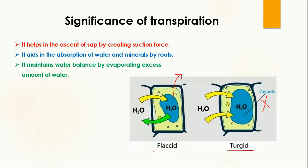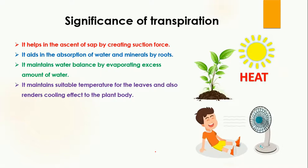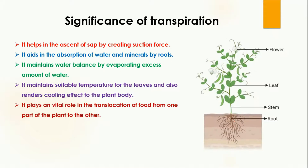Another significance of transpiration is that it helps maintain a suitable temperature for leaves and renders a cooling effect to plants. When the weather is very hot, water vapors move out of the plant leaves, taking heat with them, which cools down the plant. This is similar to sweating — on a hot day, when sweat evaporates from your body, you feel cool. Transpiration works in the same way.